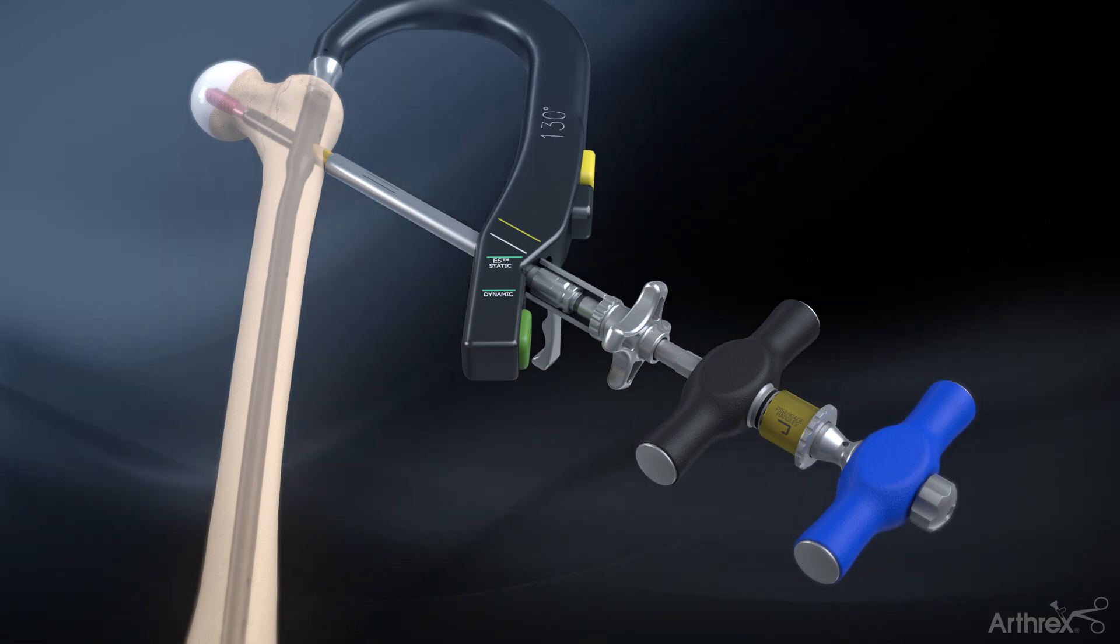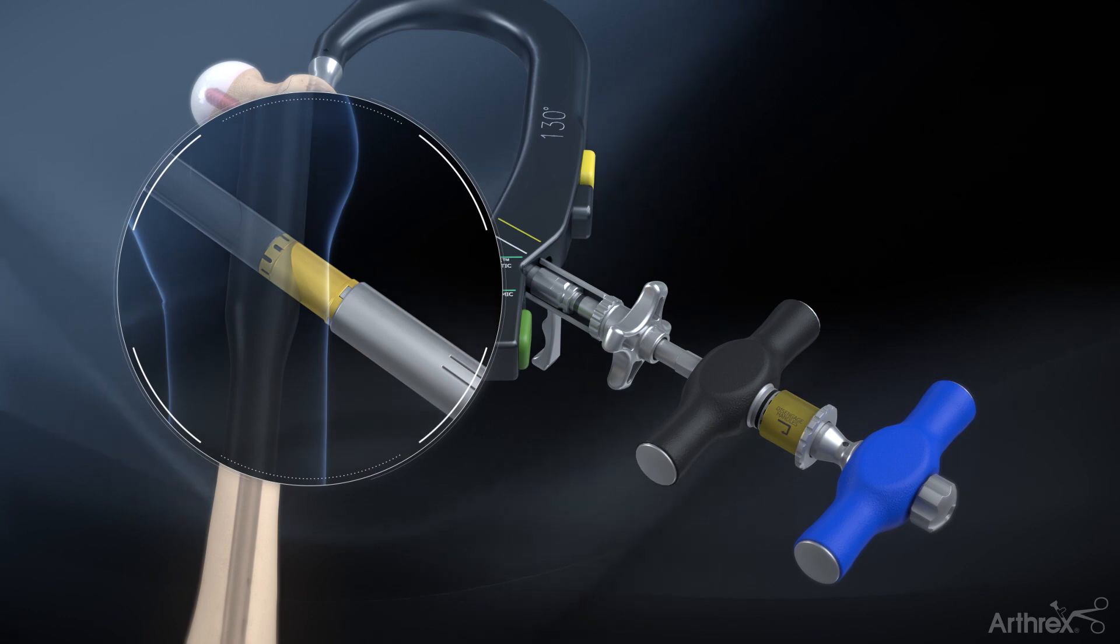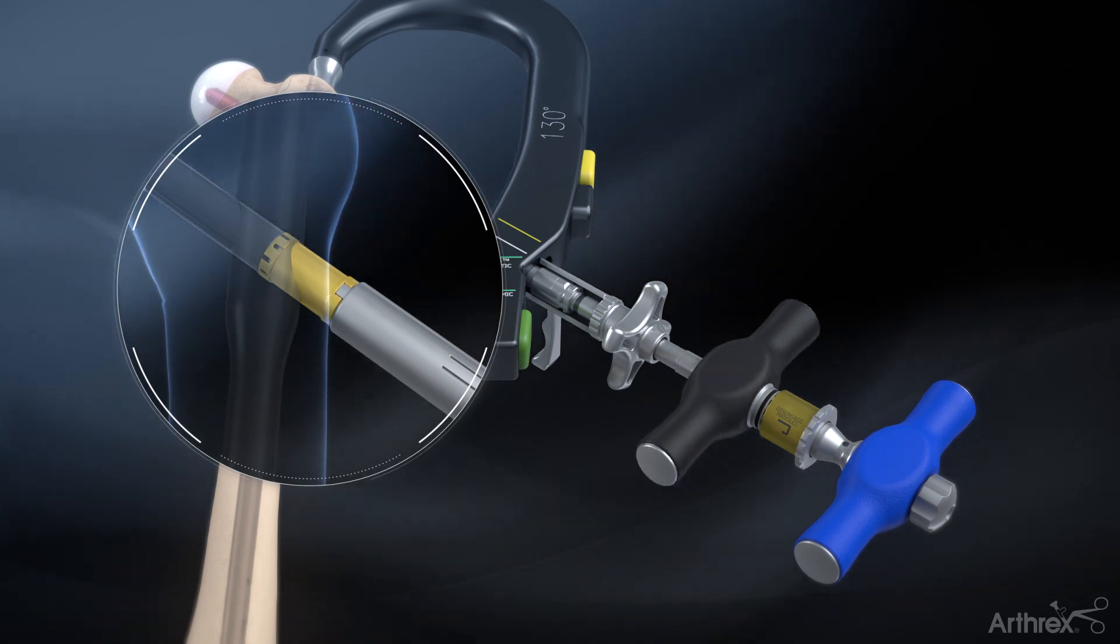To lock the telescoping lag screw, hold the blue handle stationary and turn the black handle clockwise until the torque limiter clicks.